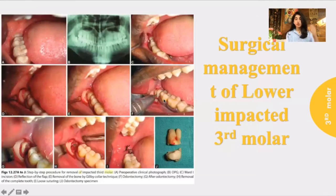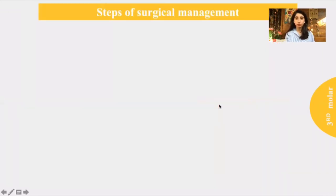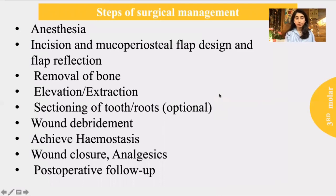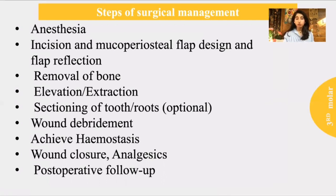Now we will start with the surgical management of the lower impacted third molar. The steps in general: first we will do the anesthesia, then the incision and mucoperiosteal flap design, removal of bone, elevation, sectioning of tooth (which is optional), wound debridement, achieve hemostasis, and wound closure and postoperative follow-up.